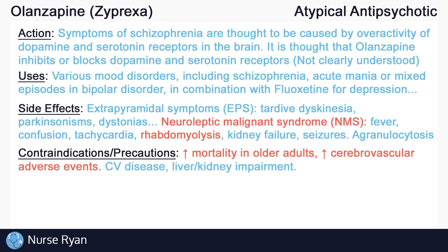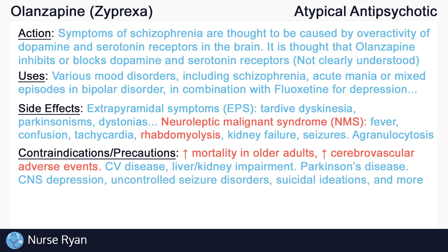Due to the side effect of difficulty swallowing, exercise caution in clients who are already at risk for aspiration. Remember that olanzapine works in part by inhibiting dopamine receptors. The symptoms of Parkinson's disease are caused by the loss of dopamine, meaning olanzapine use may increase the symptoms of Parkinson's. Caution should also be exercised in clients with severe CNS depression, uncontrolled seizure disorders, suicidal ideations, and more.